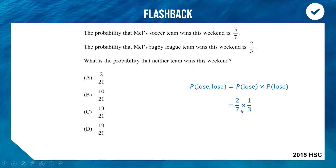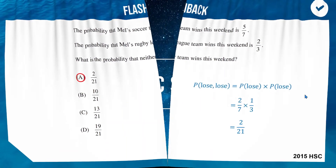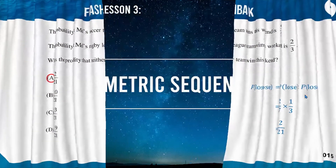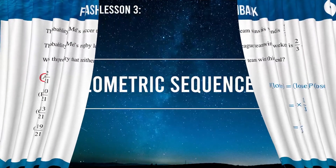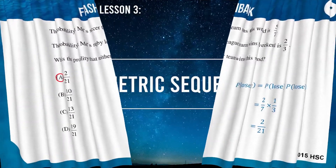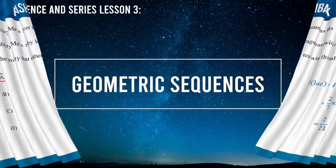Multiplying these together: two times one is two, and seven times three is 21, so the correct answer is two out of 21. Well done if that was your pick. Okay, we are all finished with arithmetic sequences and series.